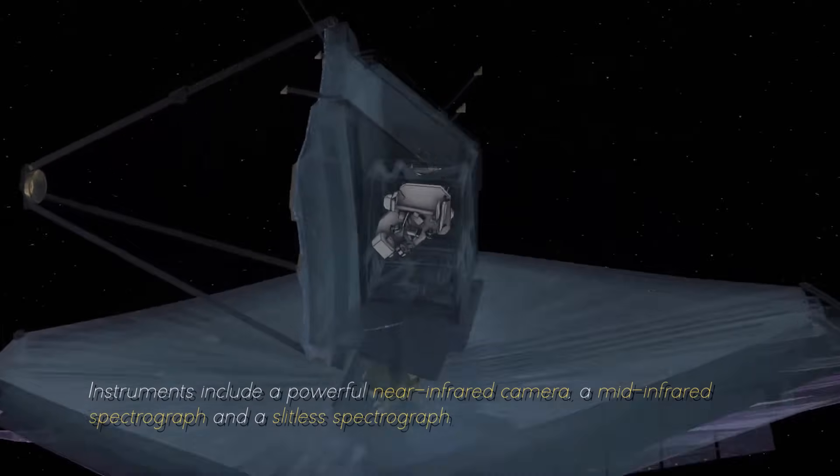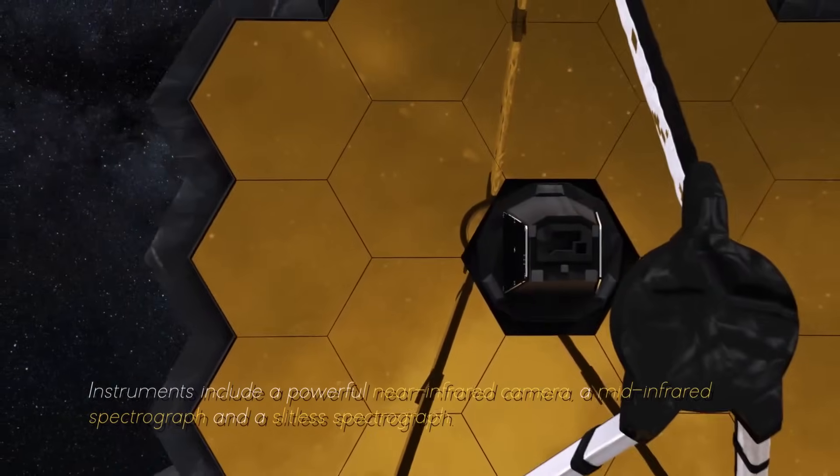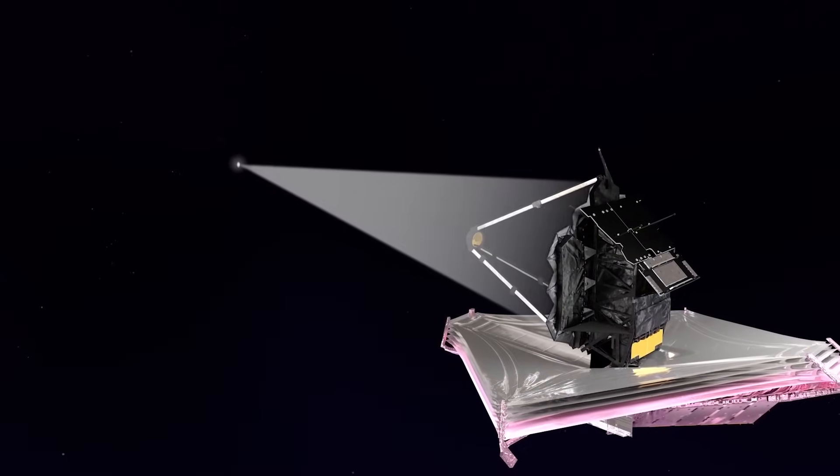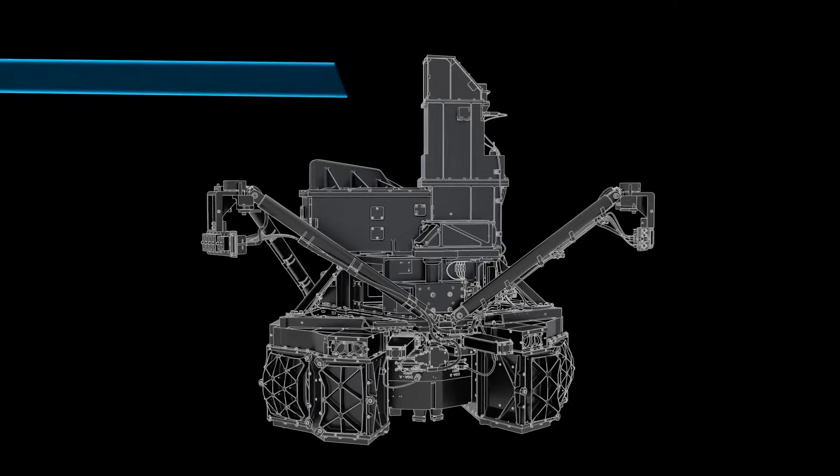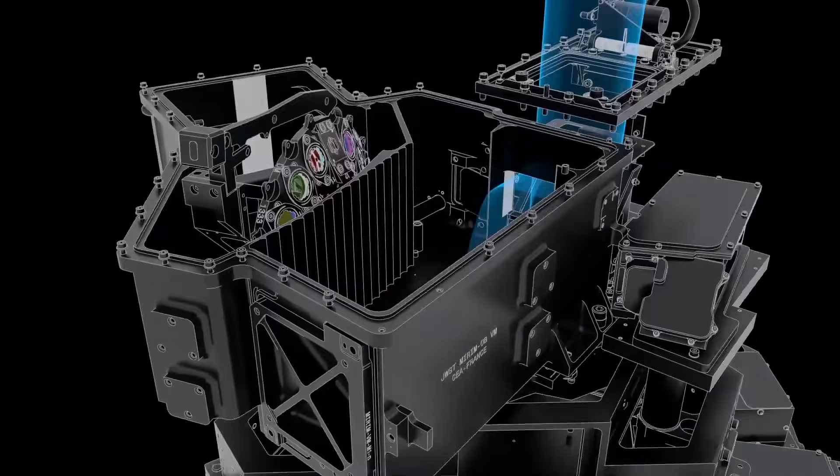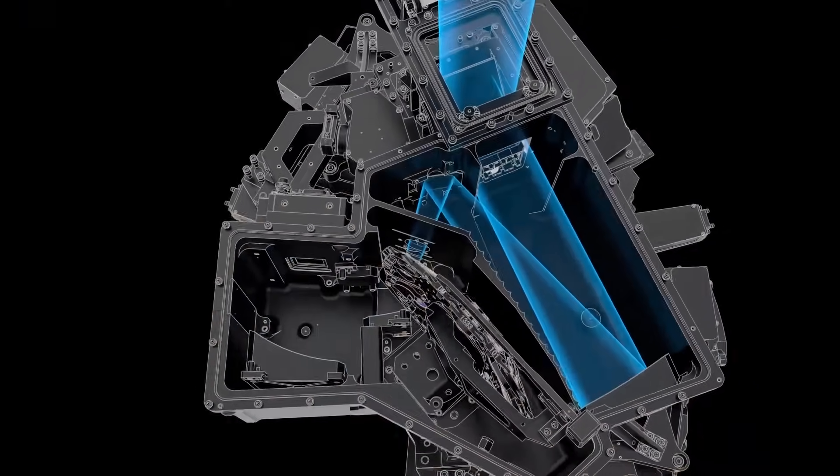This allows the JWST to collect and focus light from distant celestial objects with unmatched precision and sensitivity. Instruments include a powerful near-infrared camera, a mid-infrared spectrograph, and a slitless spectrograph. These instruments work together to capture images, measure spectra, and study the properties of objects ranging from the oldest galaxies to the planets of our solar system.